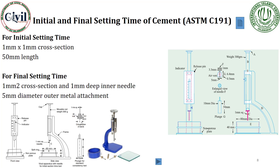At the stage when the final setting is achieved, the gelling properties between the concrete mixture would be lost. After the onset of initial setting time, there might be some cohesion or strength gain between the concrete constituents. But after the final setting of cement, it would no more achieve the desired strength.